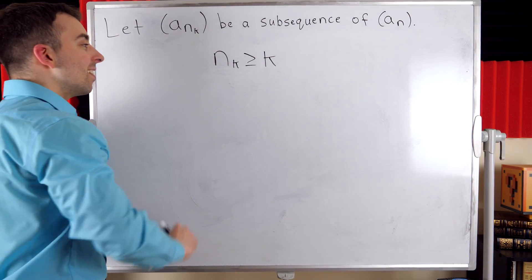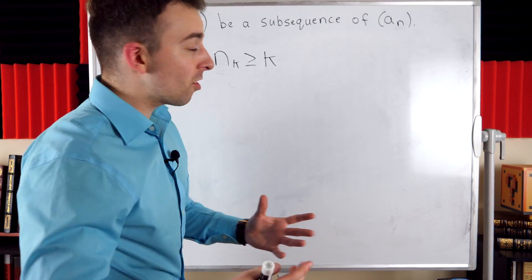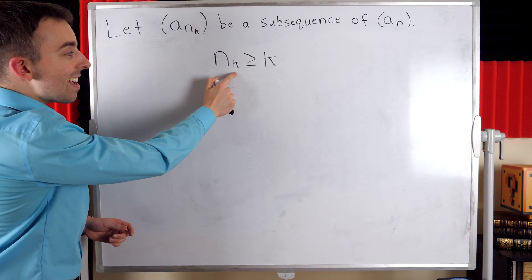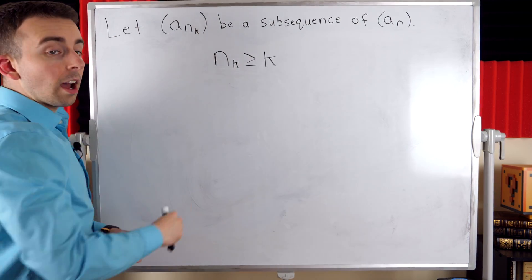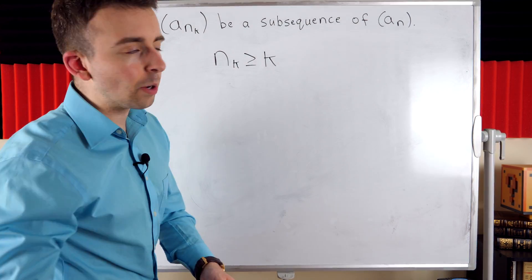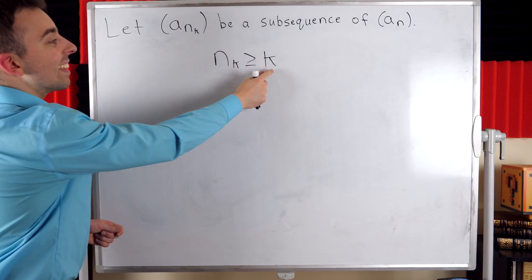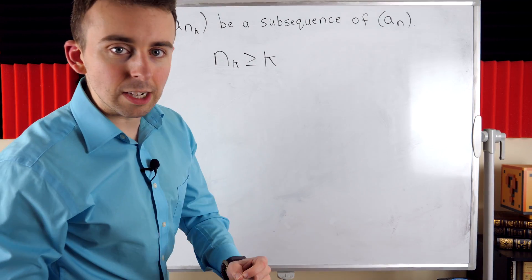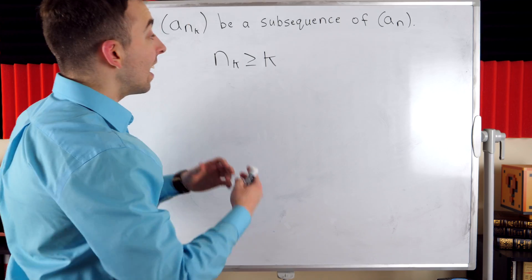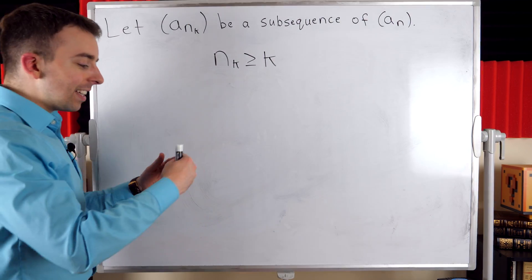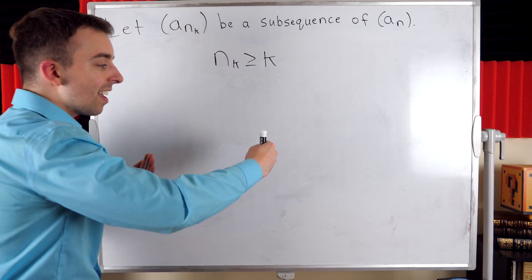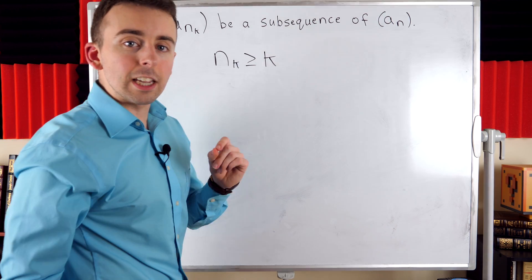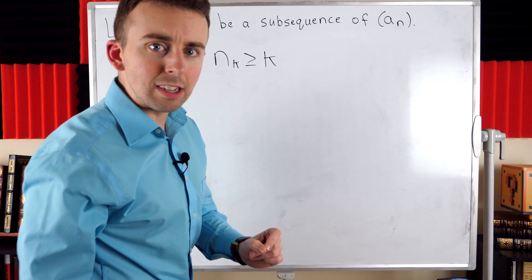So what does this mean? In a nutshell, what this is telling us is that the kth term of a subsequence is at least k terms into the original sequence. That's because each term of a subsequence has to be moving forward in the original sequence.